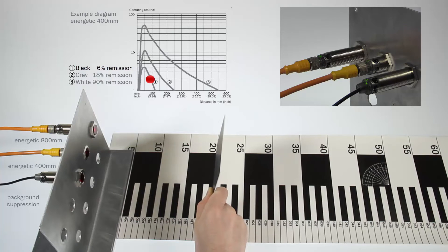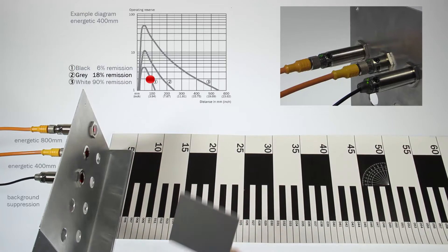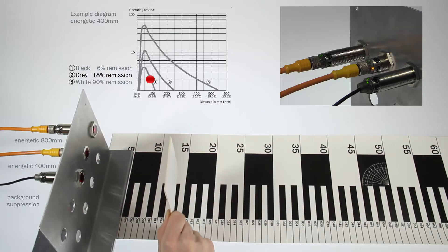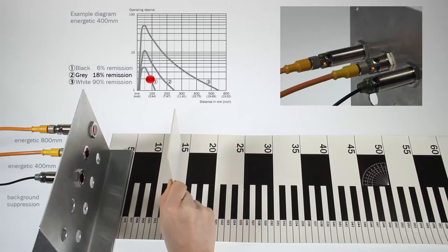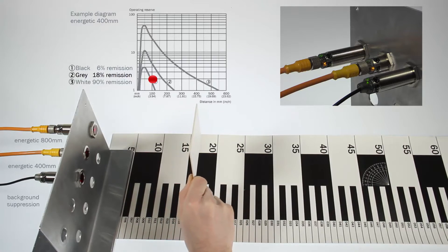As we adjusted the energetic sensor on dark black, lighter colors will still be detected even further away from the sensor. The larger the sensing range of the sensor, the larger the difference.